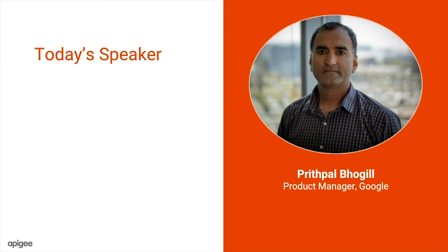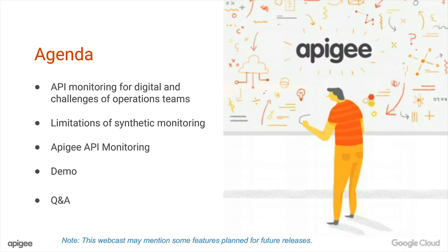I would like to welcome our speaker, Prithpal Bogil, Product Manager at Google. Prithpal has over 20 years of experience in architecting innovative technology solutions for enterprises across several industries. Thanks, Manoj. Super excited to be here. We have a power-packed agenda. We're really excited to talk about our new API monitoring capabilities. We'll walk you through how businesses are overcoming operational challenges, discuss limitations of existing synthetic monitoring tools, walk through Apigee's API monitoring solution, and do a live demo followed by Q&A.